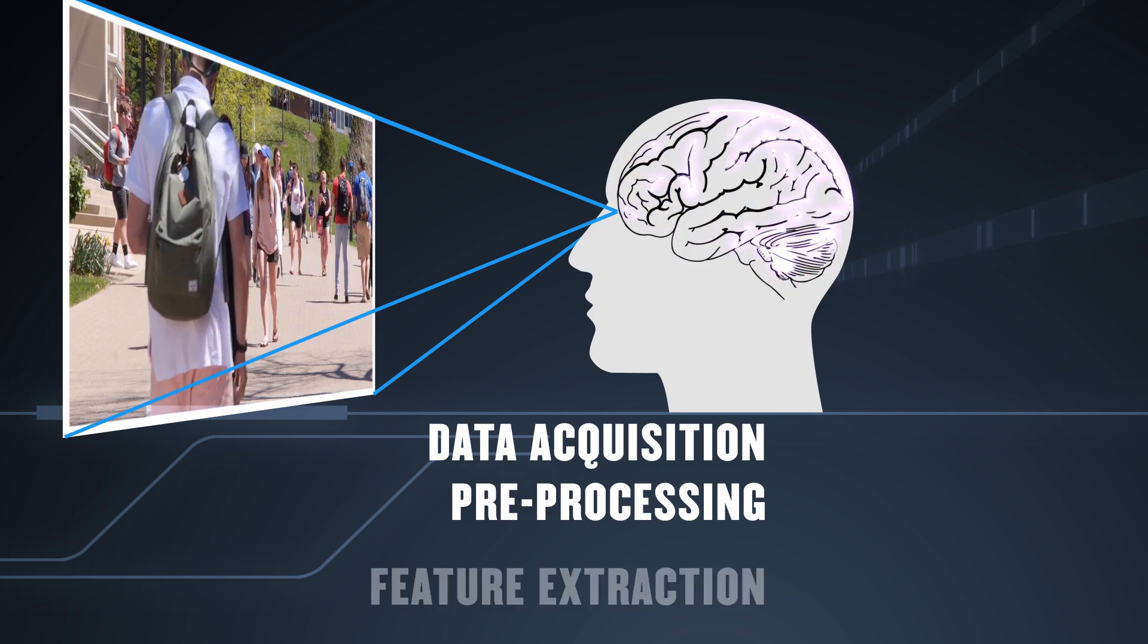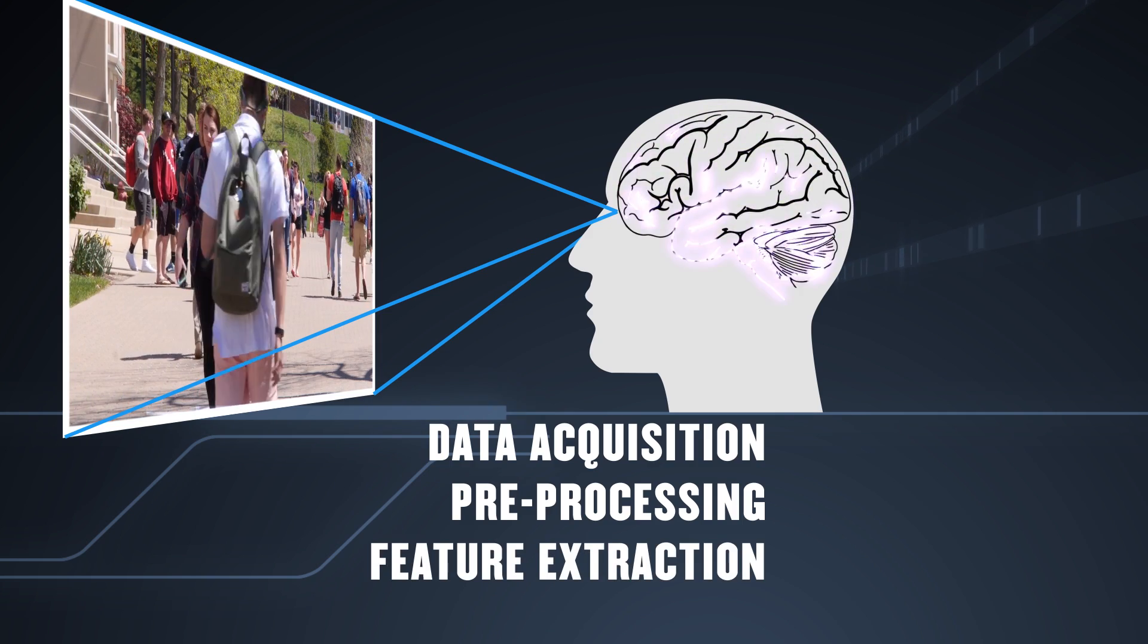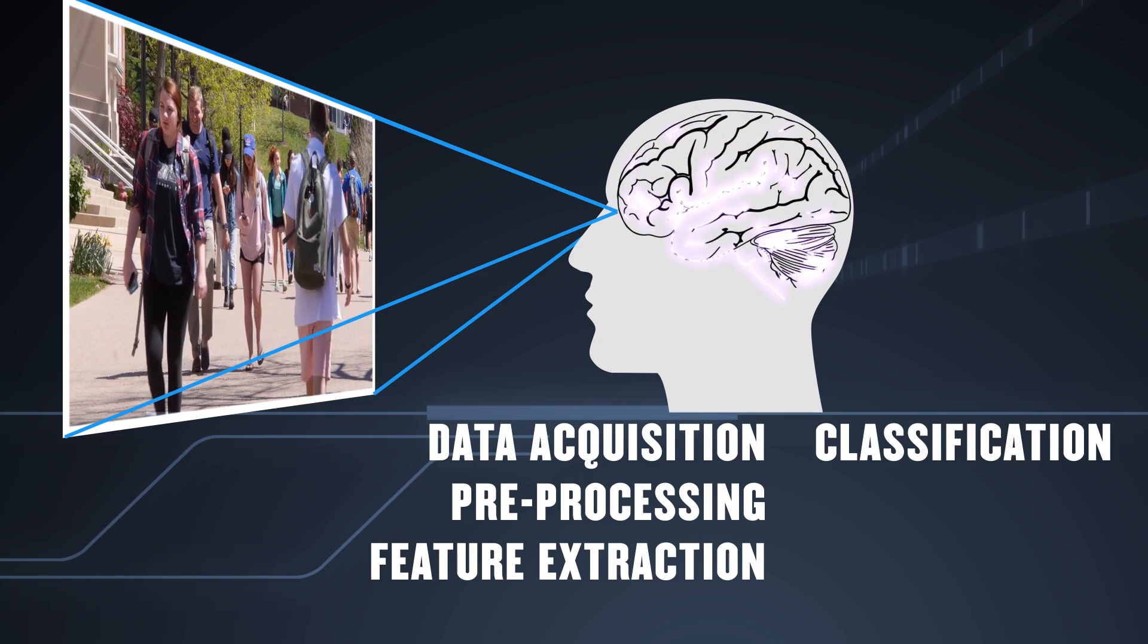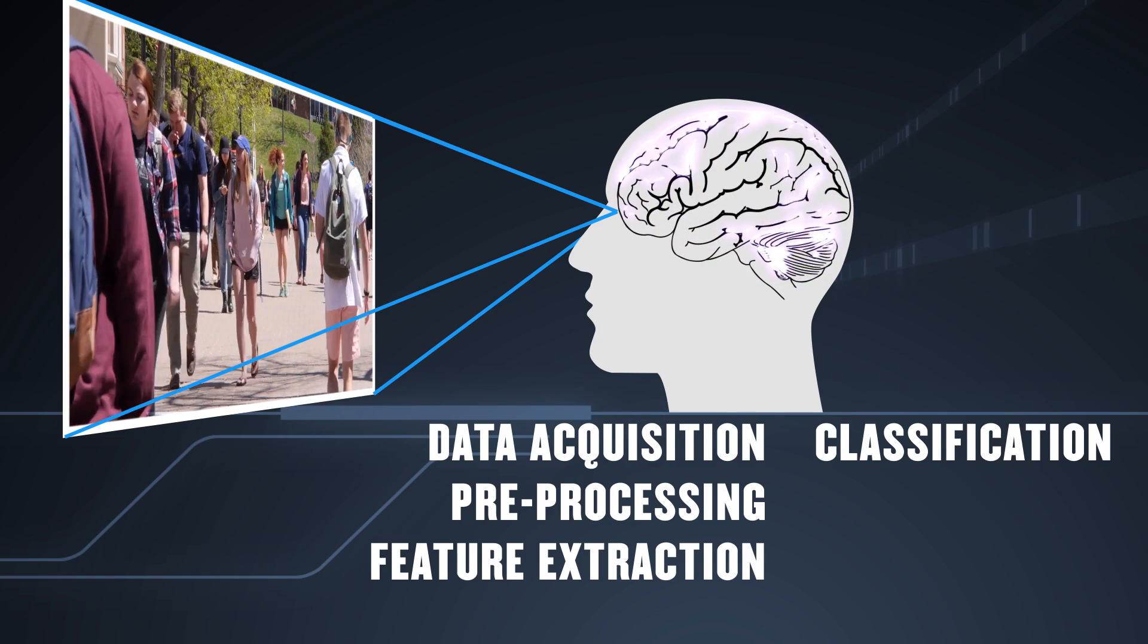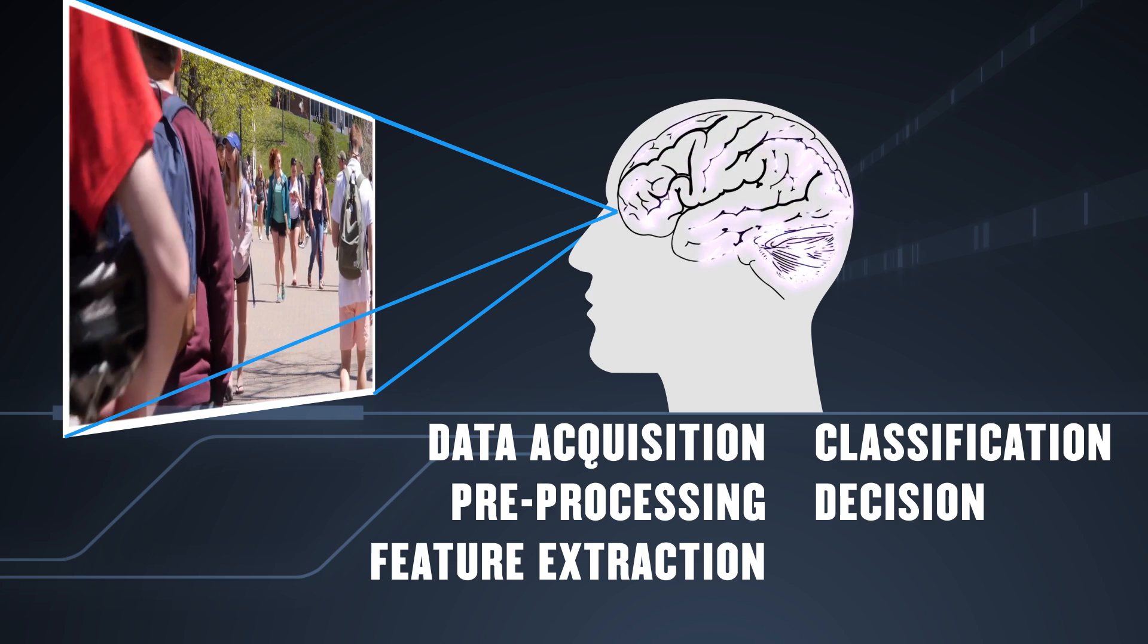We observe the features of the scene and identify what we see based on previously learned information. Then we make decisions based on that observation and analysis.